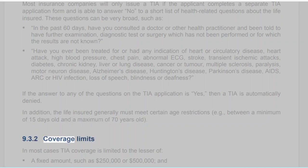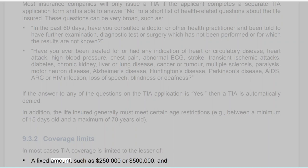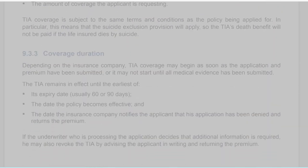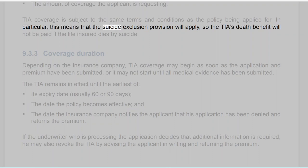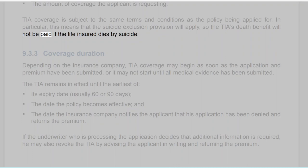Section 9.3.2: Coverage Limits. In most cases, TIA coverage is limited to the lesser of a fixed amount such as $250,000 or $500,000, and the amount of coverage the applicant is requesting. TIA coverage is subject to the same terms and conditions as the policy being applied for. In particular, this means that the suicide exclusion provision will apply, so the TIA's death benefit will not be paid if the life insured dies by suicide.